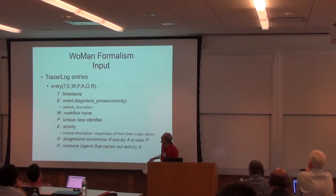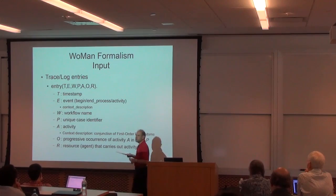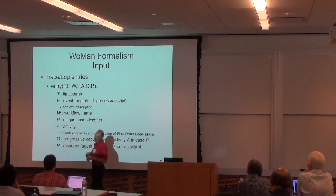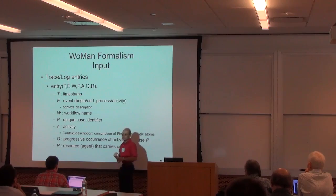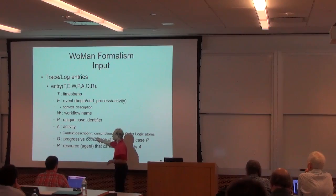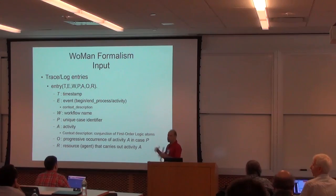Quickly, I will show the input. The input to our system is a list of entries describing process-related events, which can be the beginning or the end of the process, the beginning or the end of an activity in a process execution, and in our extended framework, also a description of the context in which actions take place.